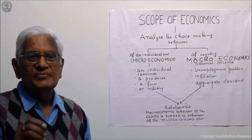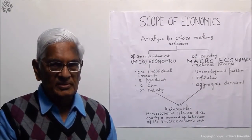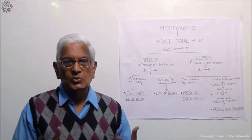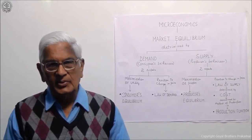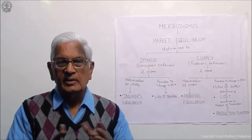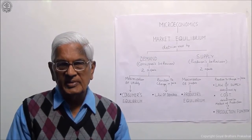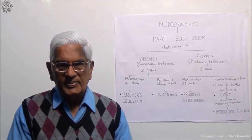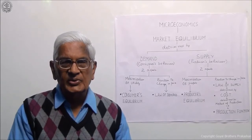Remember, the distinction between microeconomics and macroeconomics is also part of your syllabus. We have seen there are two broad divisions of economics: microeconomics and macroeconomics, and your syllabus is divided accordingly — 50 marks worth of microeconomics and 50 marks worth of macroeconomics. Now, before we start a particular topic, let us see the scope of microeconomics as such.